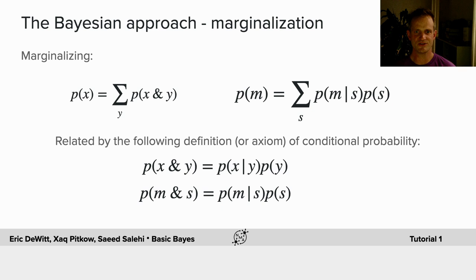These are actually directly related by the following definition or axiom of conditional probability. The probability of x and y is equal to the probability of x given y, times the probability of y.